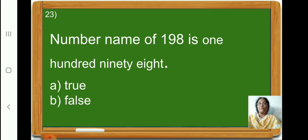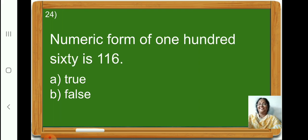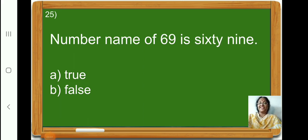Number name of 198 is one hundred and ninety-eight. Is it correct or wrong, children? Yes, it is correct. So, let us put a tick on option A, true. Numeric form of one hundred and sixty is 116. Is it correct, children? No. So, let us put a tick on option B, false. Number name of 69 is sixty-nine. So, let us put a tick on option A, true.